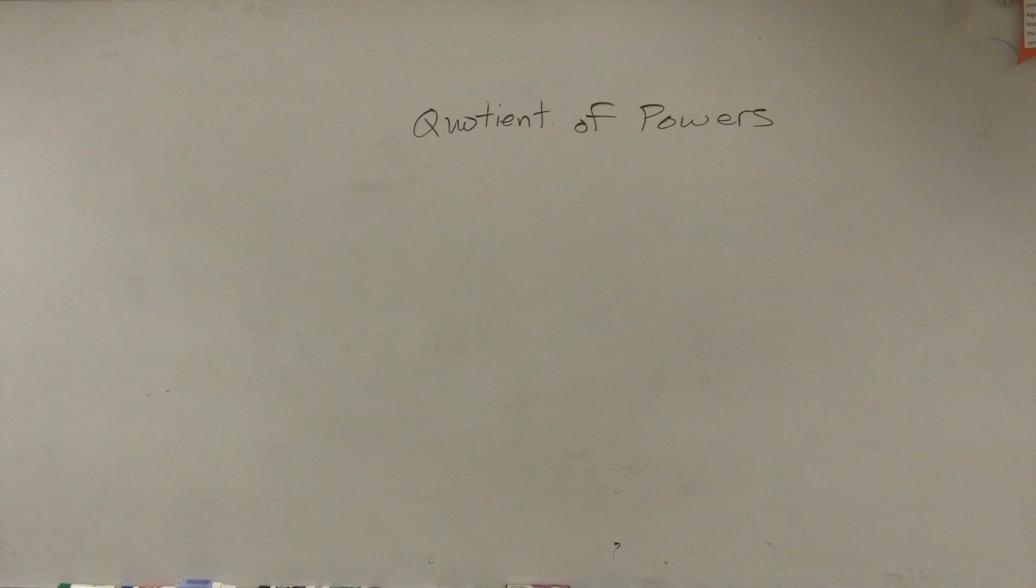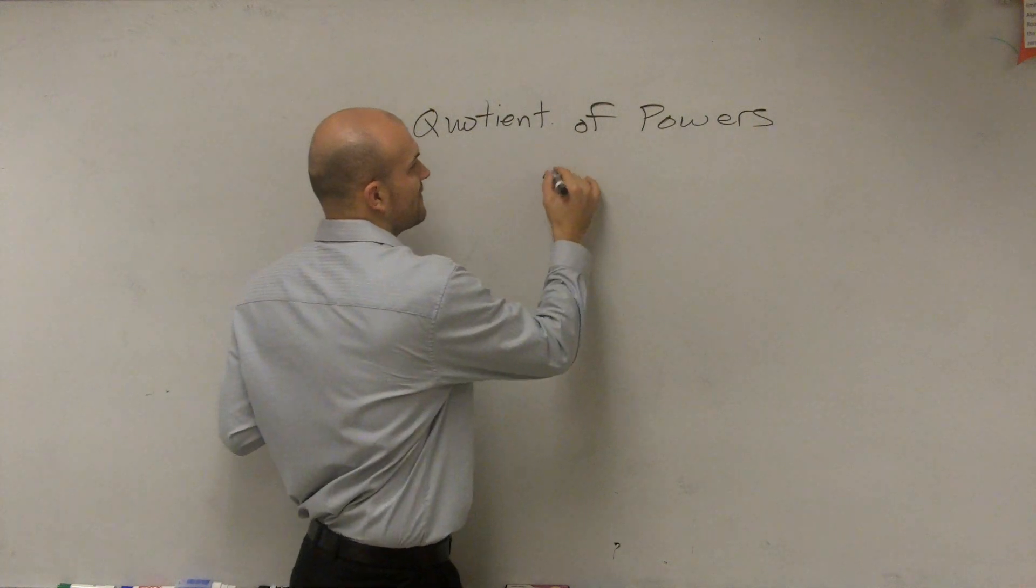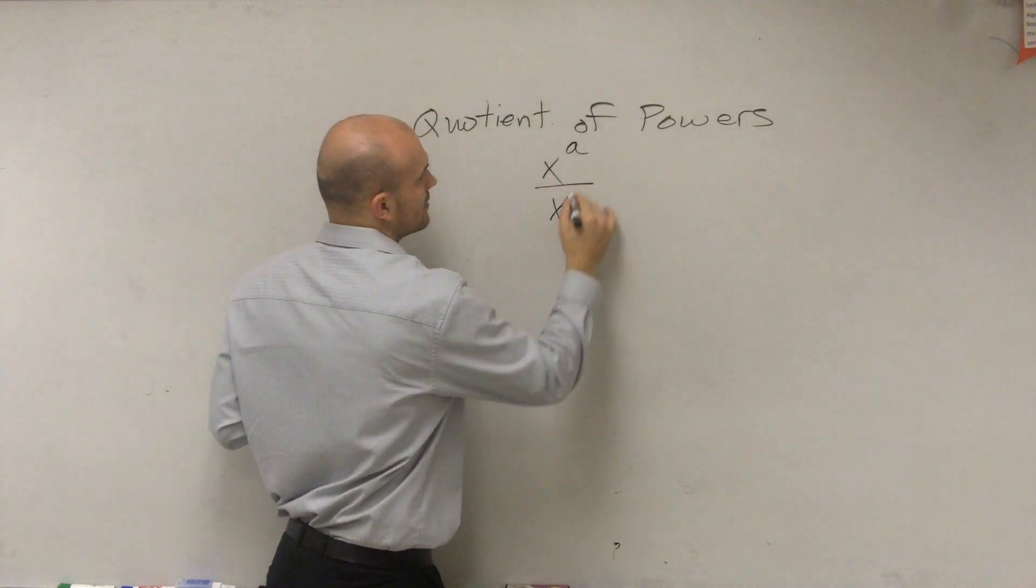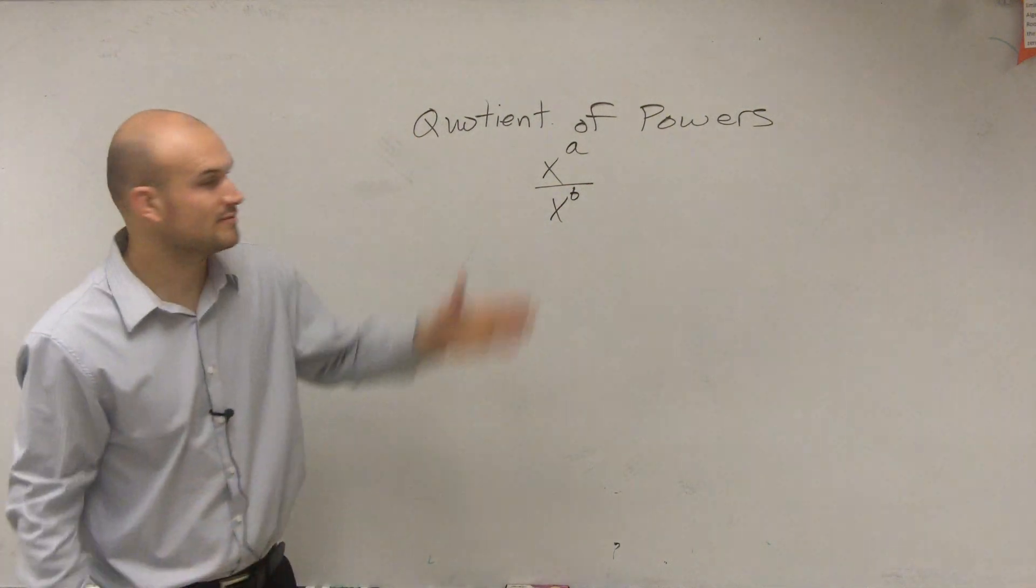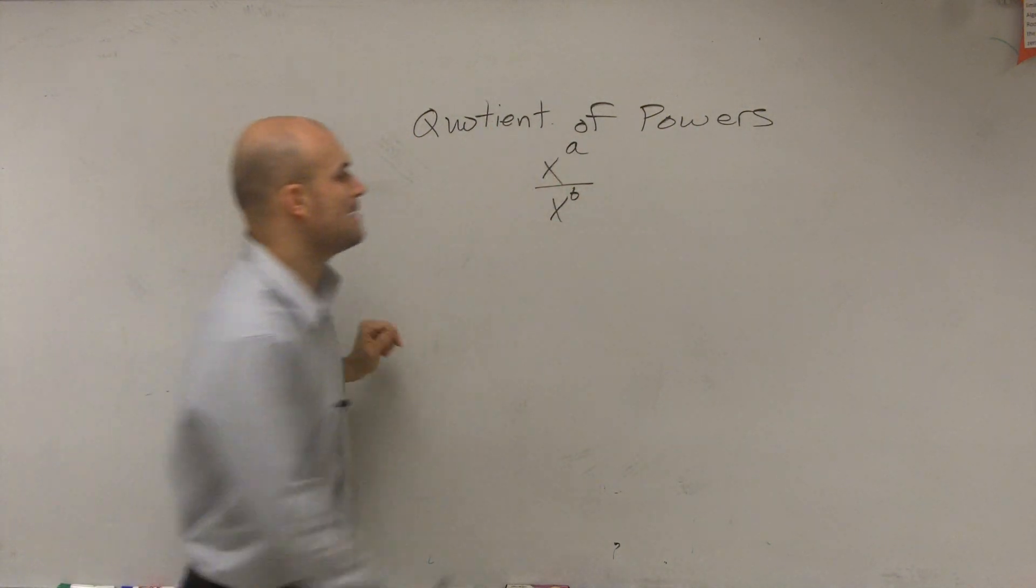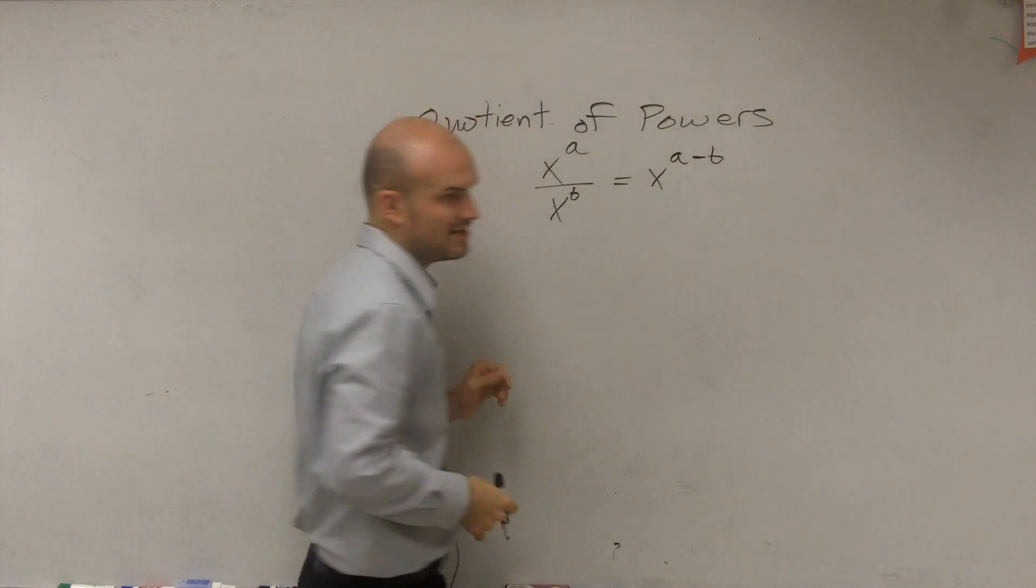So the quotient of powers, what that simply states is if I have a term, and this time we'll do x to the a, over x to the b. So if I'm taking a term with a power and dividing it by another term with a power, that simply states as x to the a minus b.